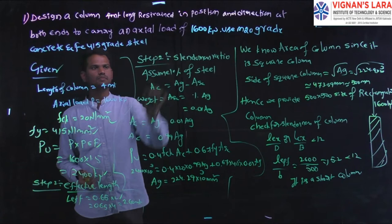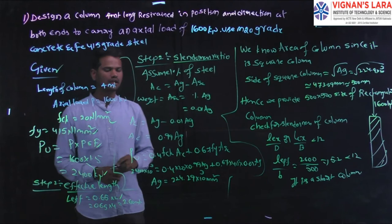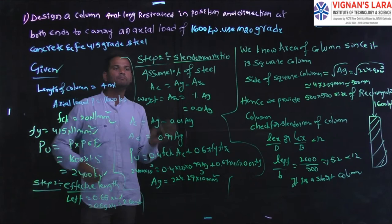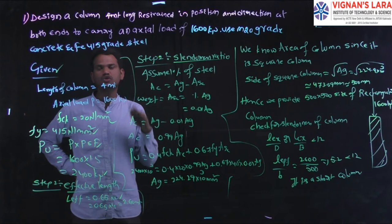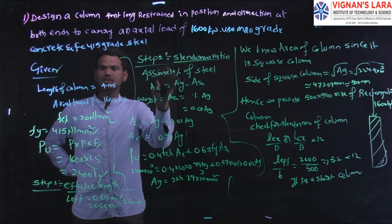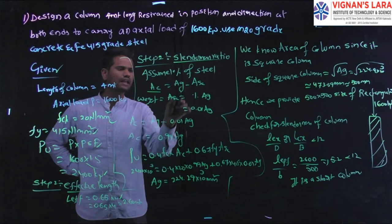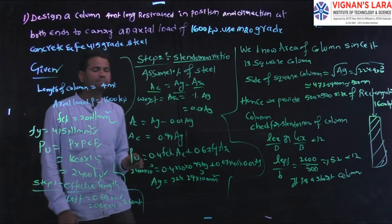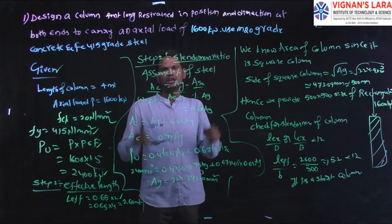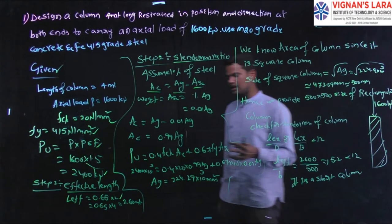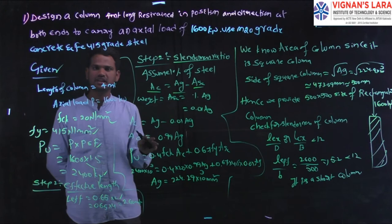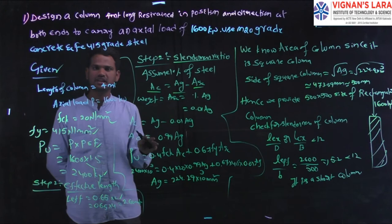In step two, we calculate the slenderness ratio of the column. Before that, we assume the percentage of steel in the concrete. We assume the percentage of steel reinforcement as 1% of Ag, where Ag is the gross cross-sectional area. Therefore, area of steel in compression Asc = 1% of Ag = 0.01 × Ag.